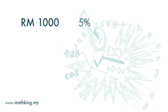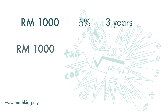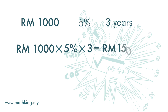How much interest will you get after 3 years? Again, we take the principal of 1,000 and multiply it by interest rate of 5%. But this time, we have 3 years, so we are going to multiply this whole thing by 3. And we get RM150. So for the formula P times R, we need to multiply it by T, which is the time period in years.